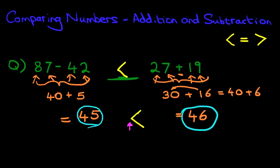Or we can always say it the other way around. So if we say it the other way around, let's have a look at this side first. We're saying 27 plus 19 is greater than 87 minus 42. So that is how we compare numbers where we have addition and subtraction, a combination on each side.